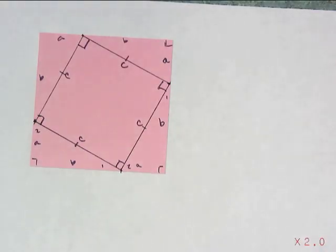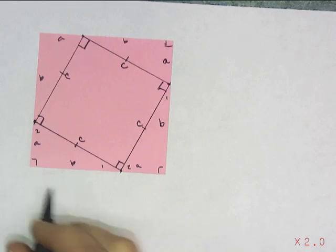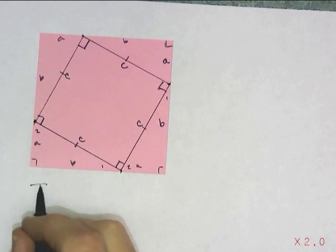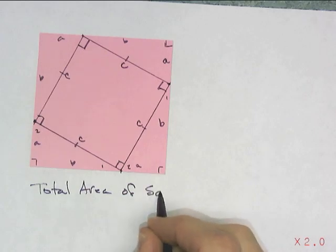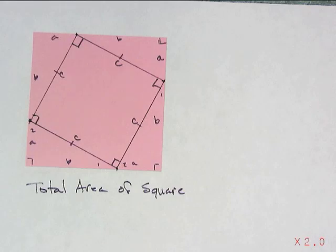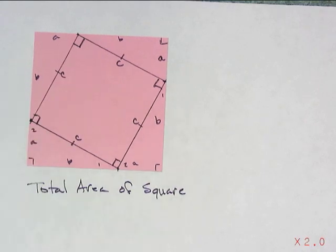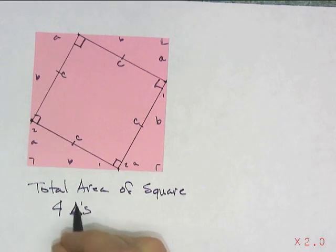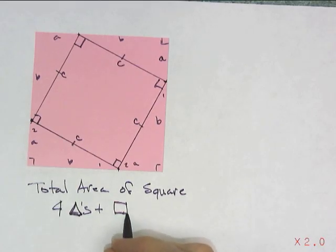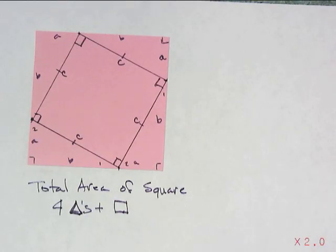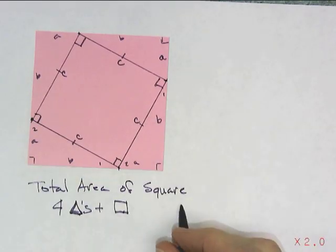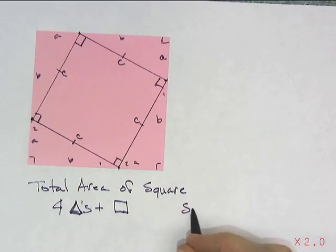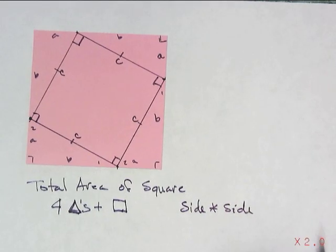All right. So now I do have a square inside a square. If I wanted to look at the total area of square, we can probably look at that in a couple different ways. We can look at it as four triangles plus a square inside. So we could do four triangles plus a square. Or we could think of it just as our regular square. It would be side times side. And how big is the side? Well, the side is A plus B. So that would be side times side.